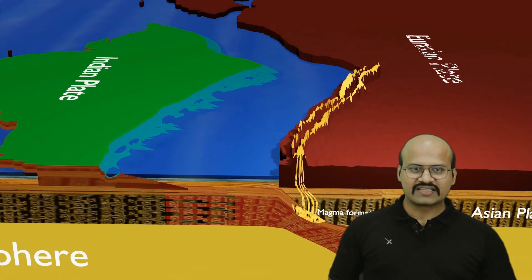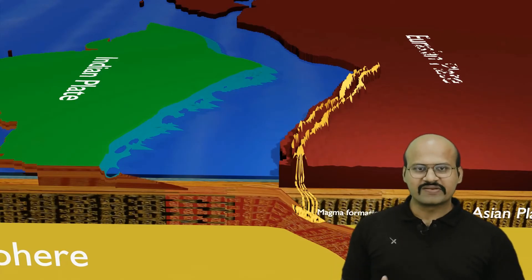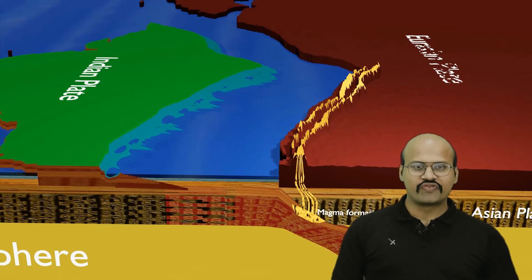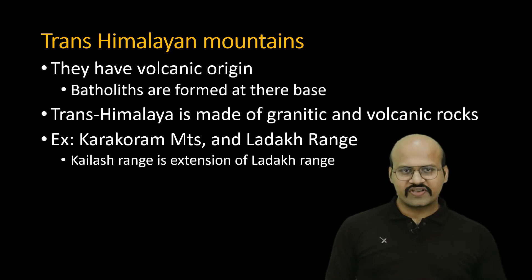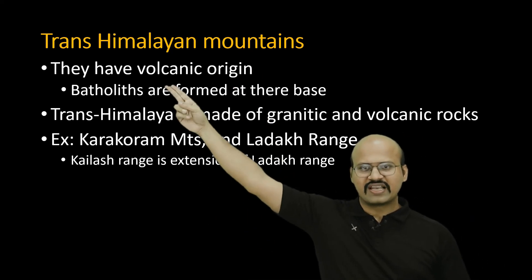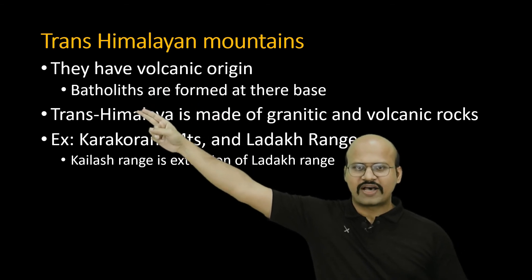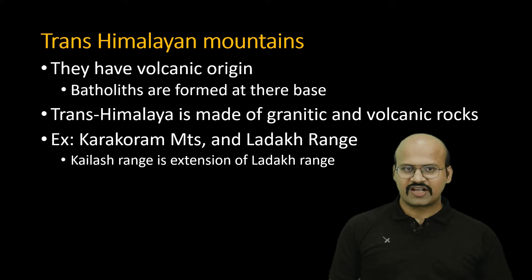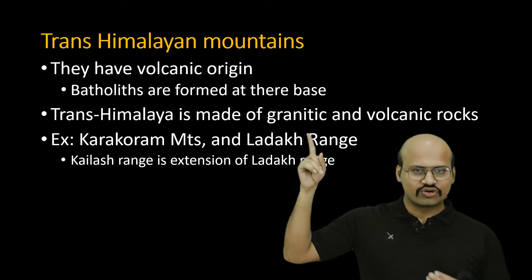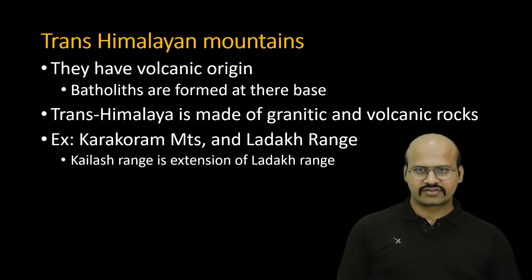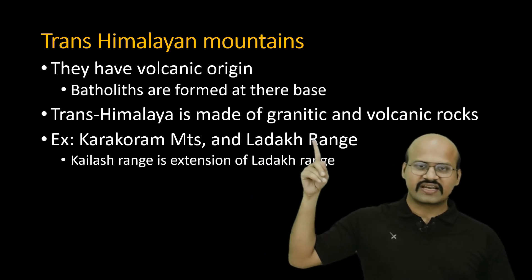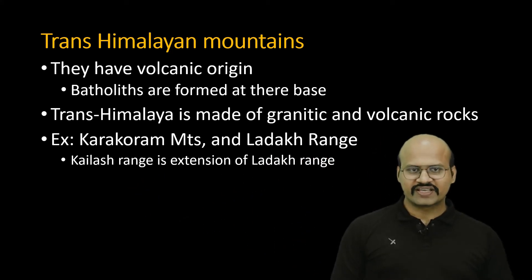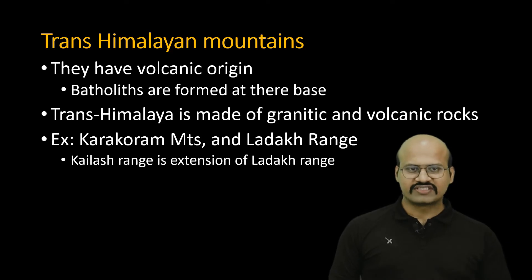The Karakuram mountains and the Ladakh mountains are examples of the Trans-Himalayan mountains, which are volcanic in nature. The Trans-Himalayan mountains mainly have volcanic origin and there is a large amount of batholith at their base. They are made of granite, which is an intrusive igneous rock, as well as volcanic rocks. The Kailas range is just an extension of the Ladakh range.